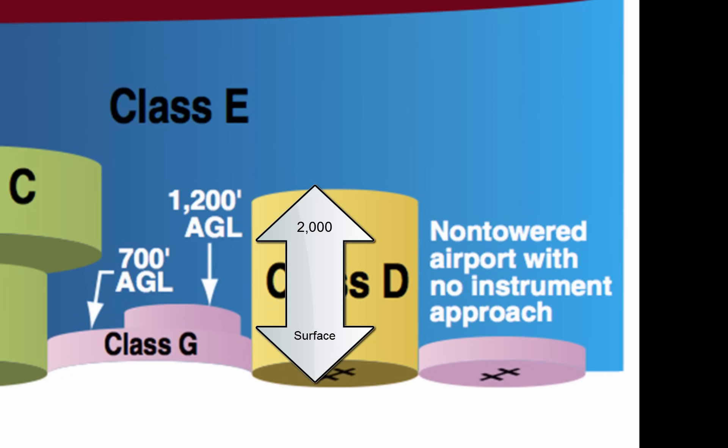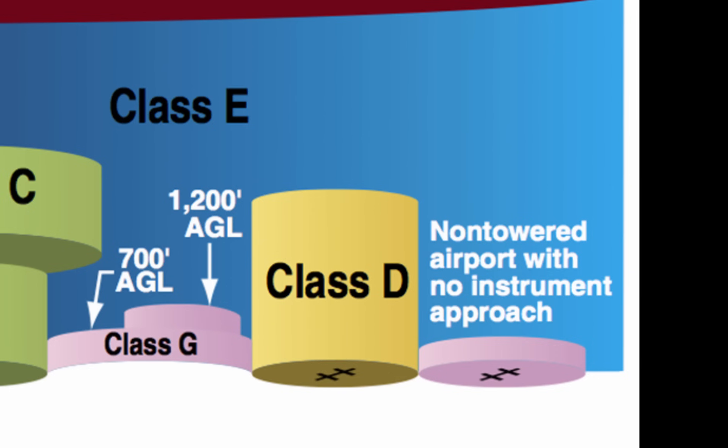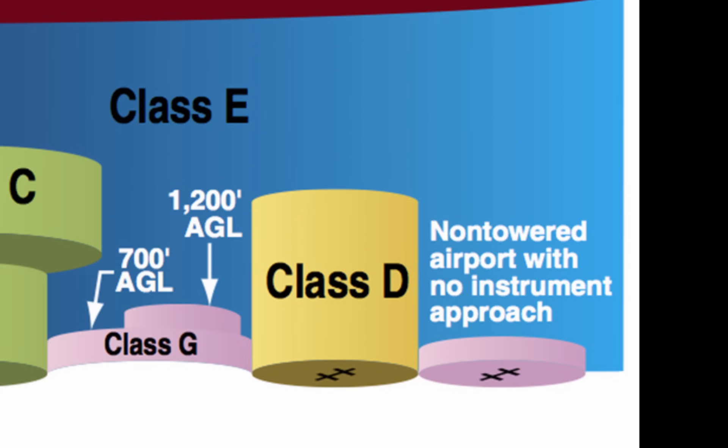Class D airspace usually extends from the surface to 2,000 feet above the airport. All aircraft within the airspace must maintain two-way radio communication with air traffic control. Class D airspace is tailored if instrument procedures are published.